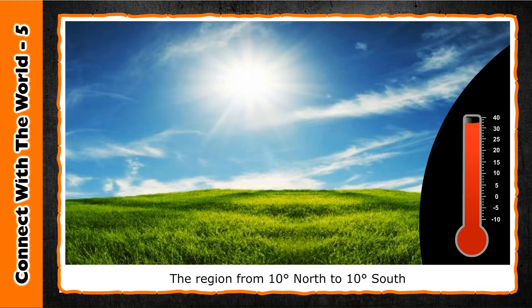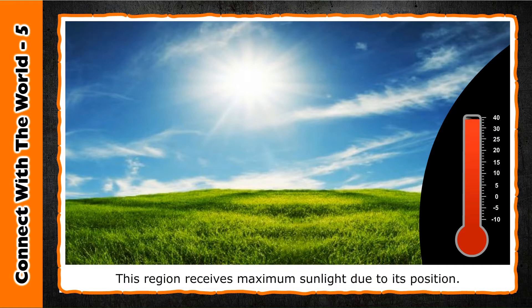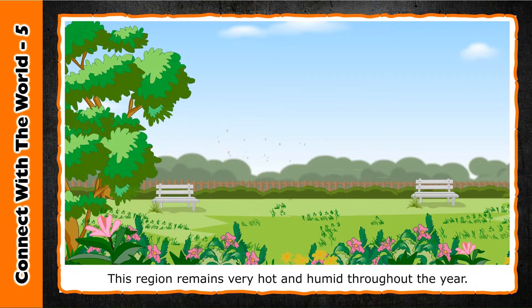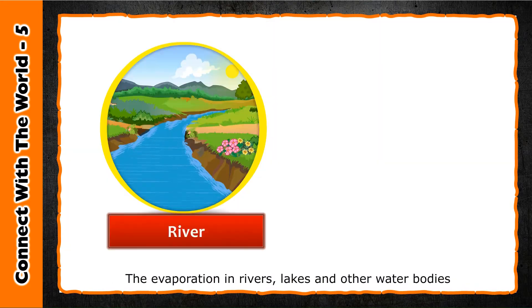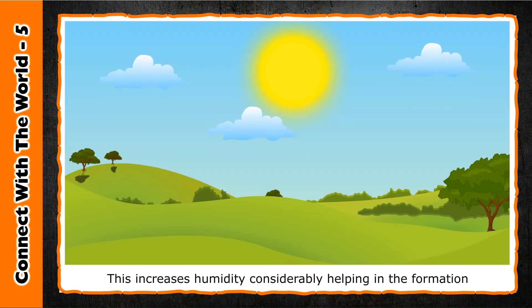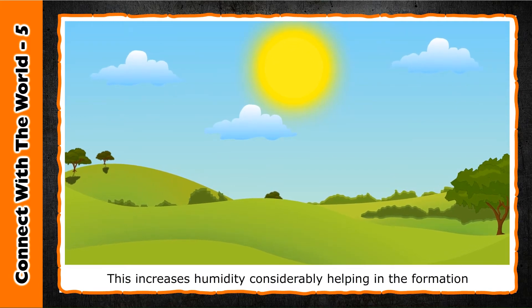The region from 10 degrees north to 10 degrees south of the equator is called the equatorial region. This region receives maximum sunlight due to its position. The climate here remains very hot and humid throughout the year. The evaporation in rivers, lakes, and other water bodies is very high in this area.